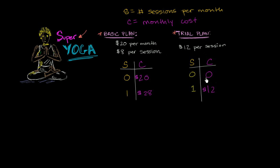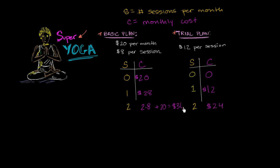Let's try two sessions. If I attend two sessions under the trial plan, it's $12 per session times two sessions — I'm going to pay $24. Under the basic plan, if I attend two sessions, two times $8 per session is $16, plus the $20 I have to spend every month. So it's 2 times 8 plus 20, which equals $36. So for zero, one, or two sessions, the trial plan seems to be winning out.